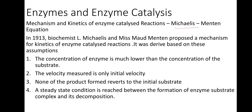The mechanism and kinetics of enzyme catalysis reaction was proposed by Michaelis and Menten, two scientists. That equation is known as the Michaelis-Menten equation. In 1913, biochemists L. Michaelis and Ms. Maud Menten proposed a mechanism for the kinetics of enzyme catalysis reaction.